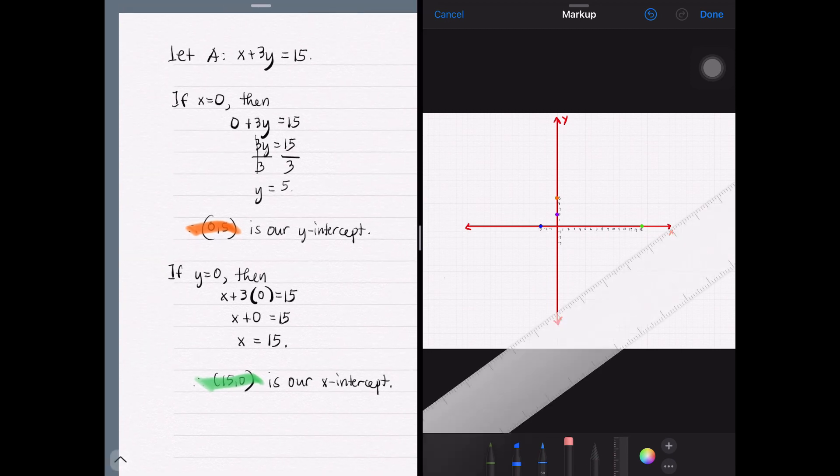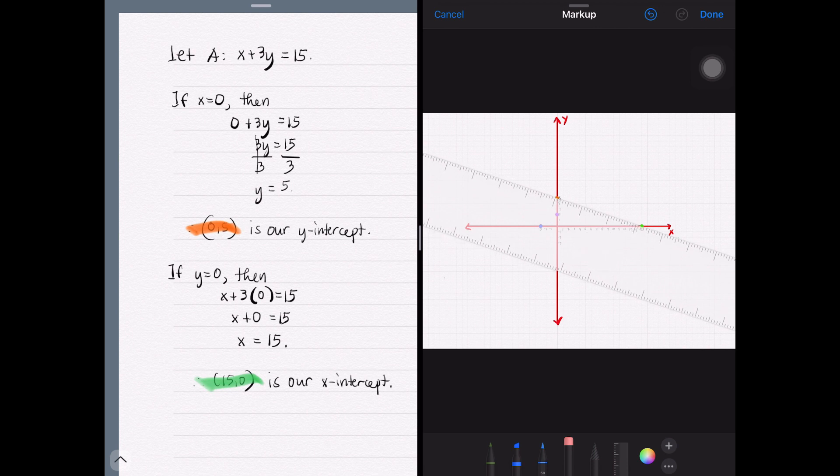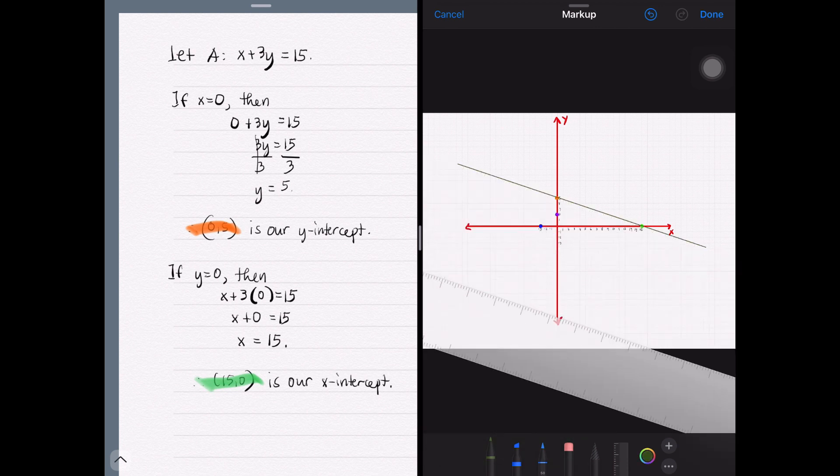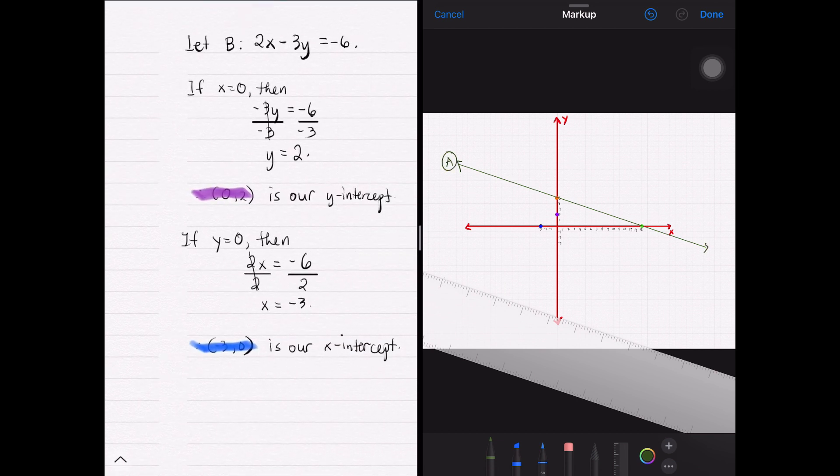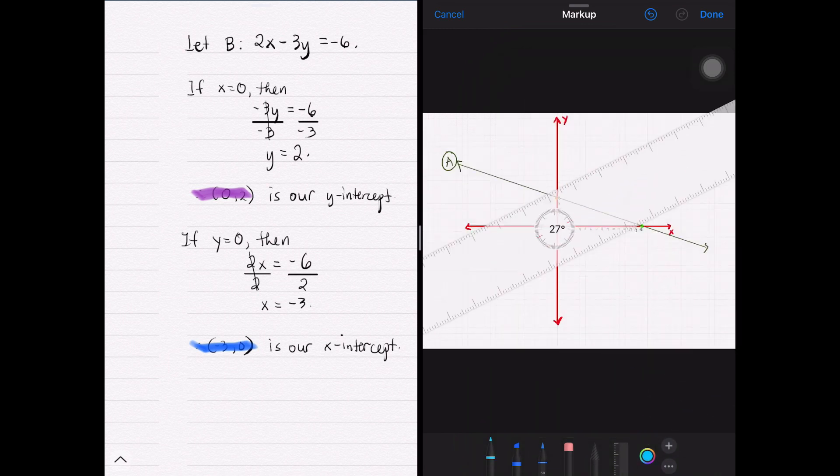So the graph of x plus 3y equals 15 would be passing through the points (0, 5) and (15, 0). The points (0, 2) and (-3, 0) would be the points for the graph 2x minus 3y equals negative 6.